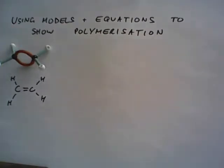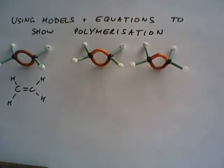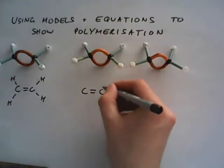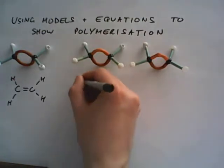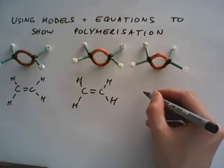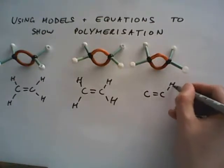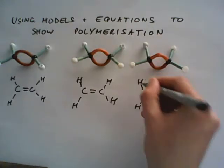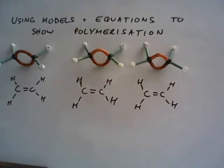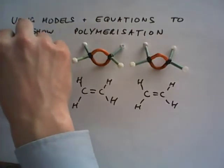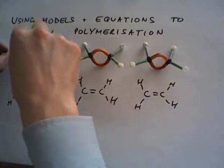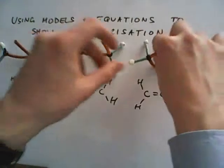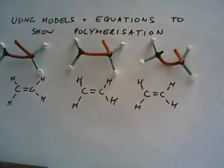When polymerization takes place, many monomers join together to form a polymer. So I need some more — here's a second ethene, and here's a third ethene. In order for the monomers to join together, the double bonds in ethene have to open out. So I'm opening up the double bonds, and that allows the monomer to bond to the next ethene. So I now put them together.